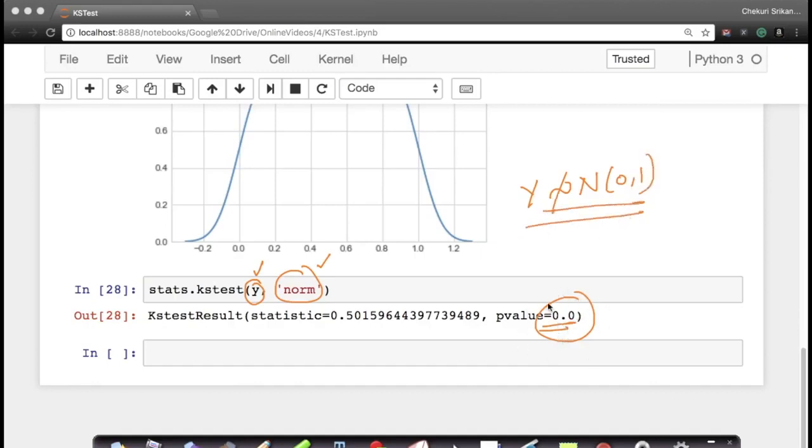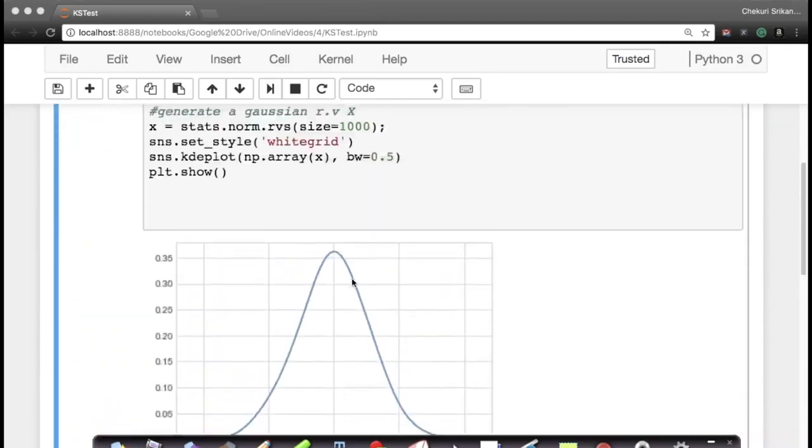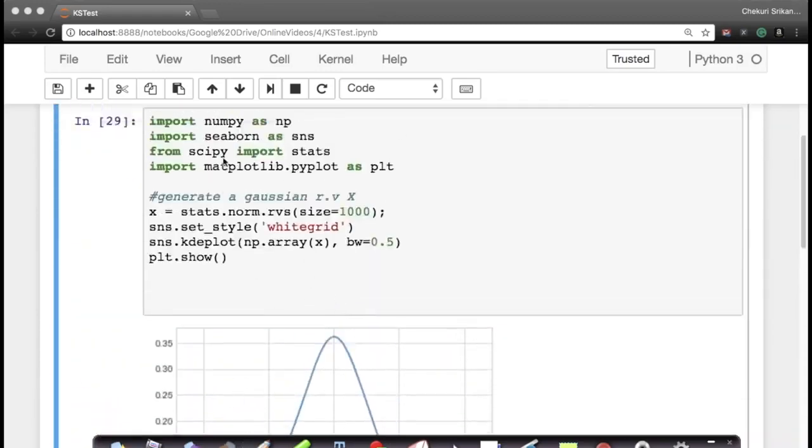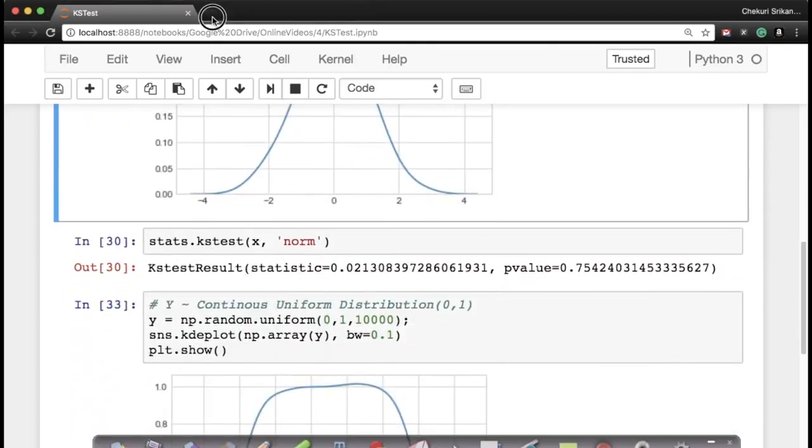Since the p-value is very small, we have very high confidence that your random variable y is not Gaussian distributed. So, performing KS test is very straightforward. It's literally in this package, in the package of SciPy stats. From SciPy, we imported stats. And in this package, there is literally one small function called stats.kstest.